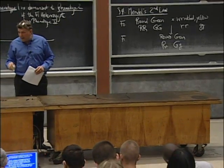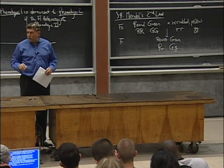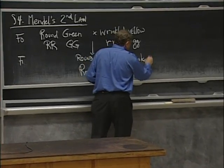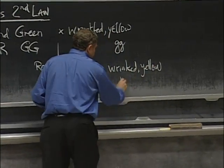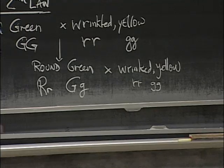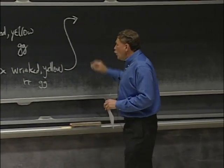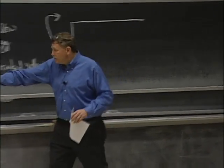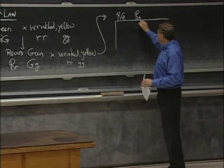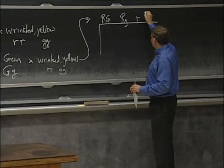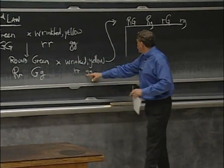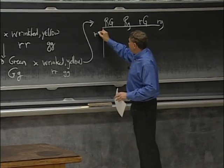Now we could self these plants, and our head would hurt with the 9 to 3 to 3 to 1 ratio. So instead, why don't we cross these plants back to the wrinkled yellow strain — little r, little r, little g, little g — to make our life easier. What are the possible gametes that could emerge from this parent? We could get big R and big G, big R and little g, little r and big G, or little r and little g. Those are the four possibilities. From the other parent, only little r and little g — no other options.